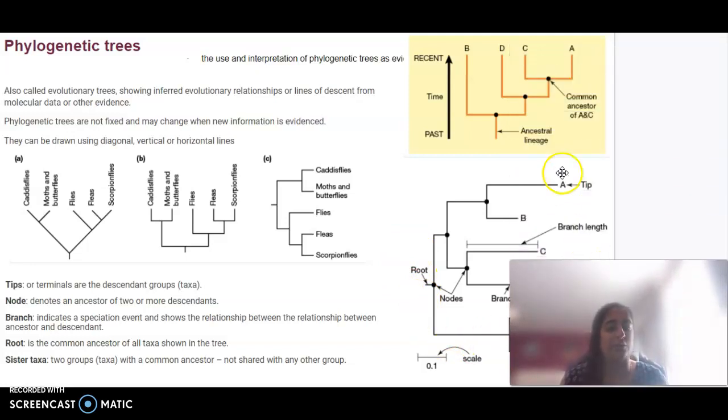In this diagram, the left or bottom shows the oldest time frame, and closest to the splitting is the newest. If they come off the same node, they've shared a common ancestor. For example, the common ancestor of A and C is here, while the common ancestor of A, C, and D is here. A speciation event caused that divergence.